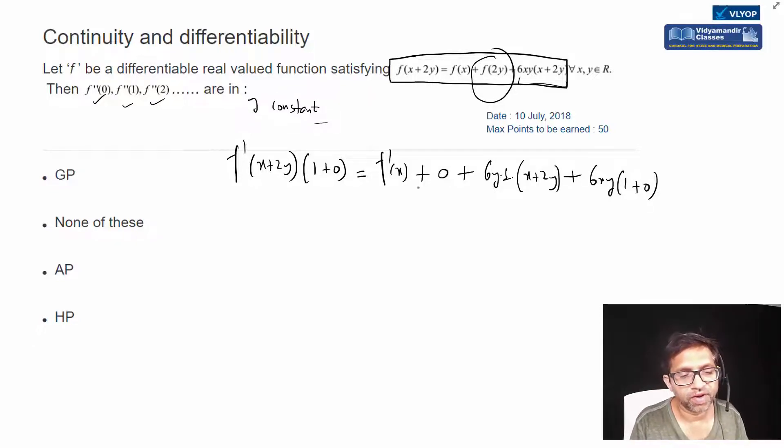This is the functional equation we get. What we will do now is hit and trial - replace 2y with minus x. f'(0) equals to f'(x) plus 0 plus...